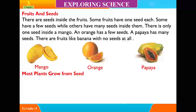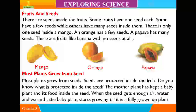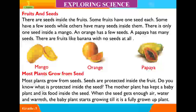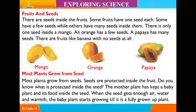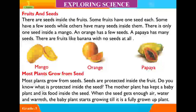Most plants grow from seeds. Seeds are protected inside the fruit. The mother plant has kept a baby plant and its food inside the seed. When the seed gets enough air, water and warmth, the baby plant grows till it is a fully grown-up plant.